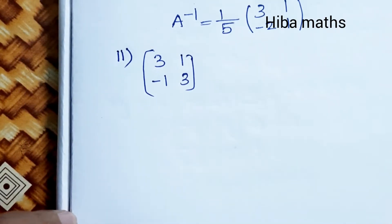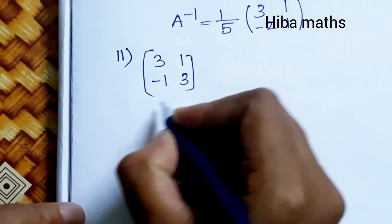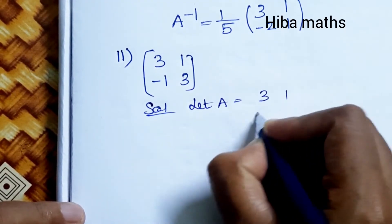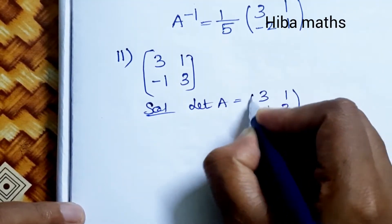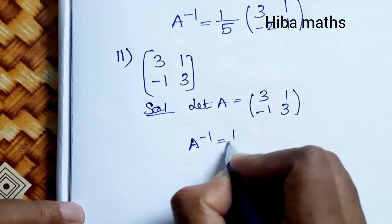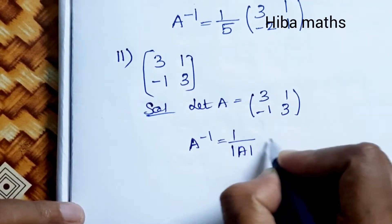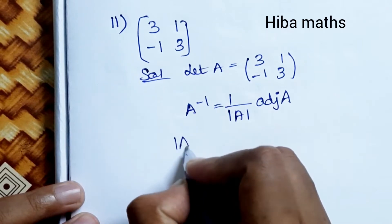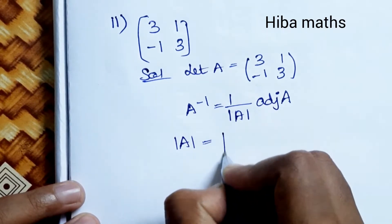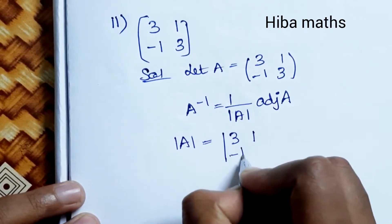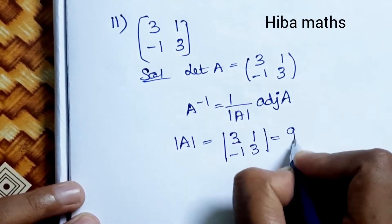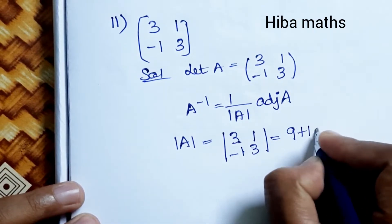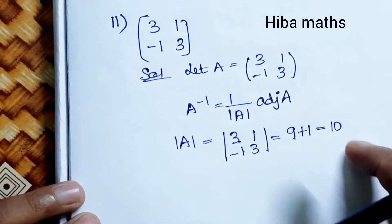Second subdivision: Let A = [3, 1; -1, 3]. Using the formula A inverse = (1/|A|) × adjoint of A. The modulus of A: 3×3 = 9, minus (-1)×1 = +1, so |A| = 9 + 1 = 10.